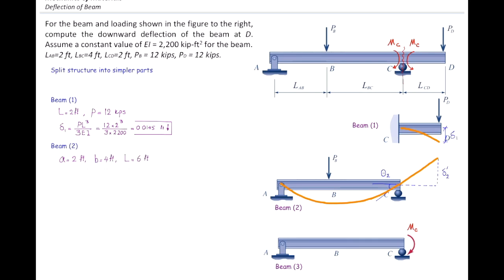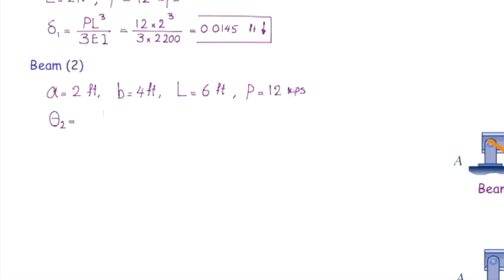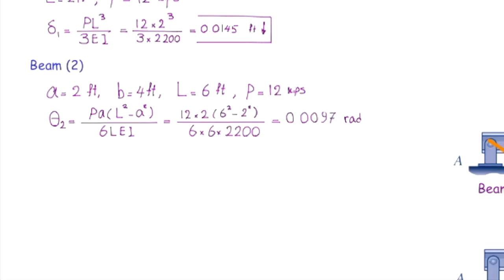Theta two equals Pa times (L² minus a²) divided by 6LEI, and that gives us 0.0097 radians as the slope of the second beam at point C.